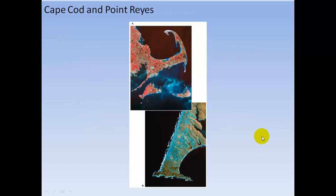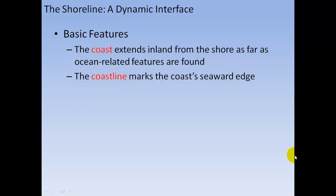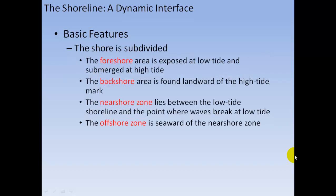Here are some pictures of the shoreline — Cape Cod and Point Reyes. The shoreline is the line that marks the contact between land and sea. The shore extends between the lowest tide level and the highest elevation affected by storm waves. The coast extends inland from the shore as far as ocean-related features are found, and the coastline marks the coast's seaward edge.